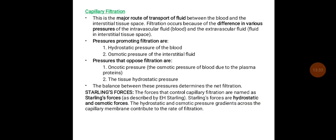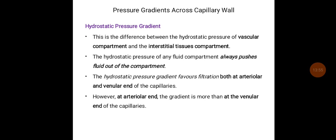These forces are called Starling forces — the forces that control capillary filtration. Starling forces are hydrostatic and osmotic forces. The hydrostatic and osmotic pressure gradients across the capillary membrane contribute to the rate of filtration. The hydrostatic pressure gradient is the difference between the hydrostatic pressure of the vascular compartment and the interstitial tissue compartment; it always pushes fluid out of the compartment. The hydrostatic pressure gradient favors filtration at both the arteriolar and venular ends, though the gradient is greater at the arteriolar end and becomes less — even negative — at the venular end. Capillary pressure is around 37 mmHg at the arteriolar end and 17 mmHg at the venular end.